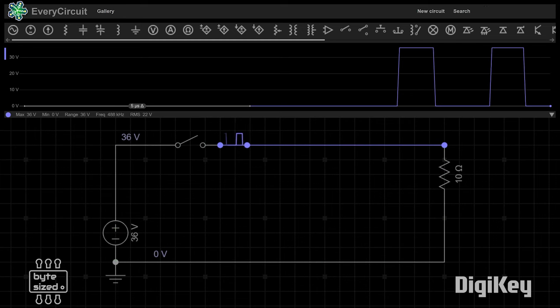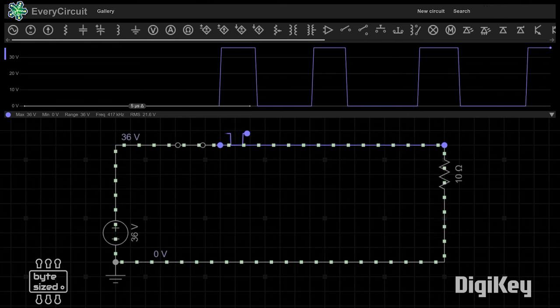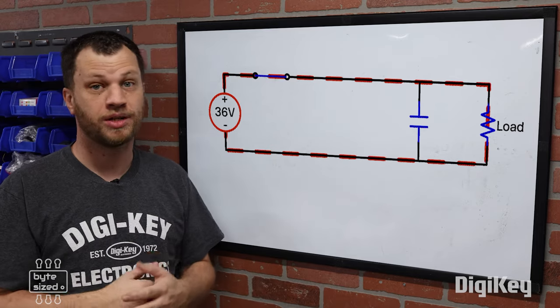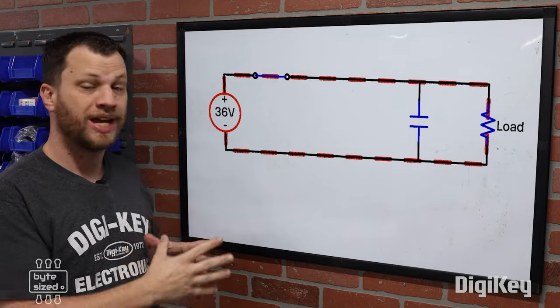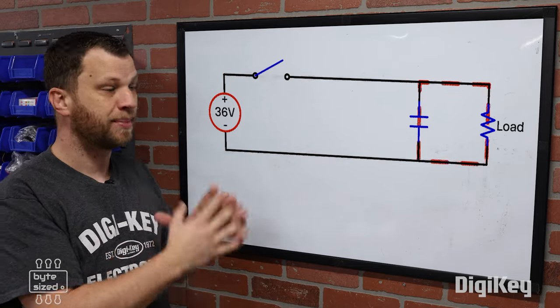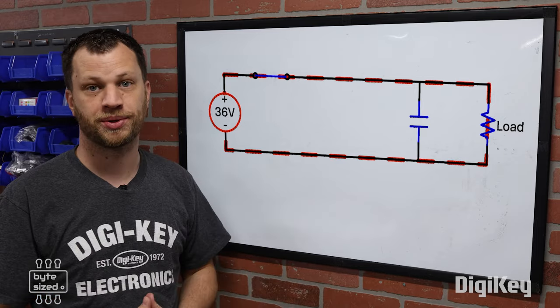Unfortunately, we can't leave our circuit like this because when the switch is open, there won't be any current flowing to our load. So what if I add a capacitor in parallel with my load? That way when the switch is closed, it will slowly charge up the capacitor and as the switch opens, my capacitor will provide a voltage to my load.